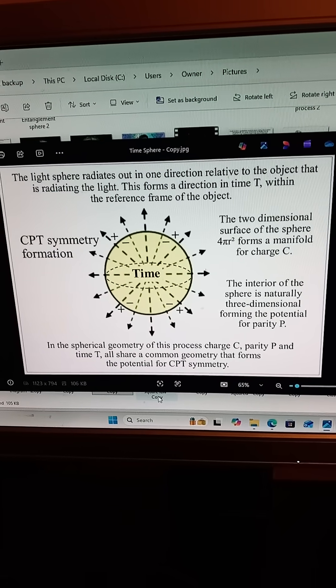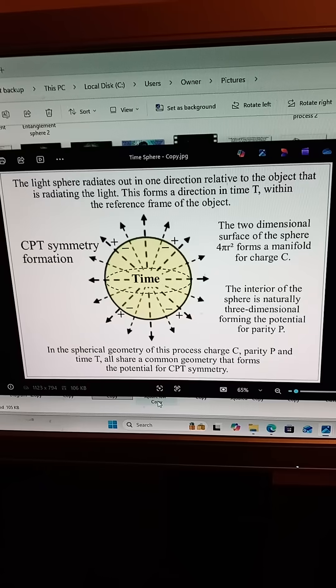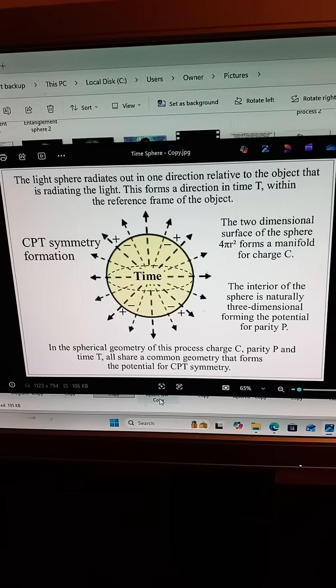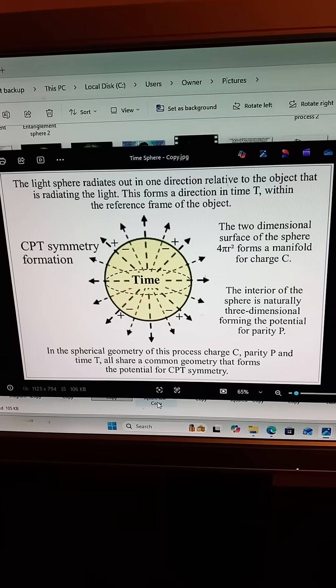Information leaks outward. The Bloch vector shrinks inward. Coherence becomes entropy. As quantum possibilities collapse into classical facts, time moves forward.